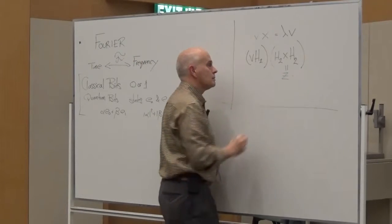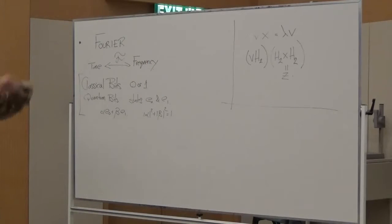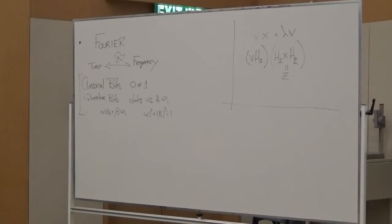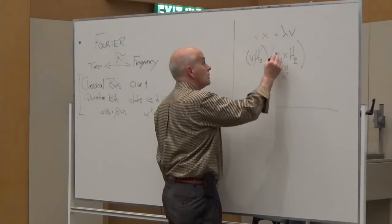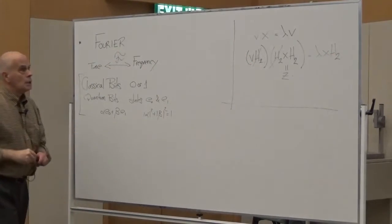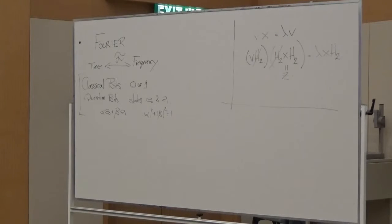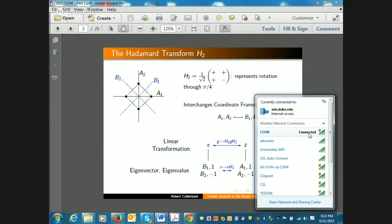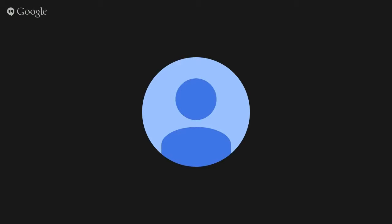When you conjugate X by H2, you get Z. When you conjugate Z by H2, you get X. So on the left-hand side you have X with its two eigenspaces corresponding to +1 and -1, and this transform H2 interchanges time and frequency. This is exactly what happens in the Fourier domain, where you have time shifts and frequency shifts, and when you conjugate a time shift by the Fourier transform, you get a frequency shift.